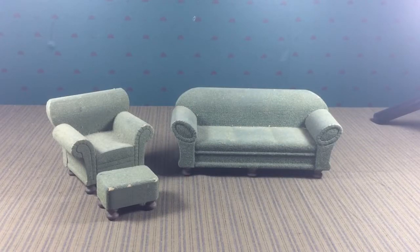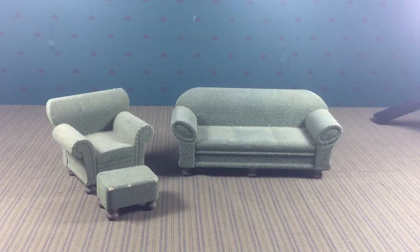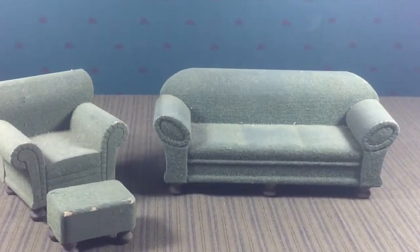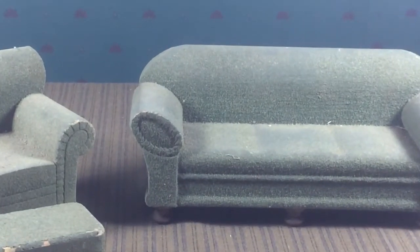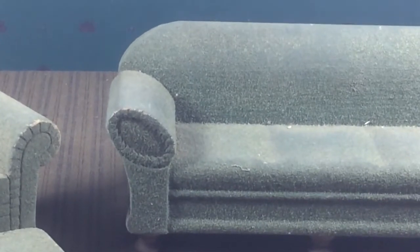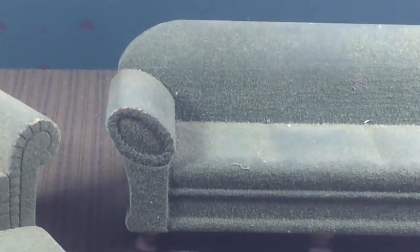These are solid wood but they're flocked to make it look like upholstery. The sofa, chair, and ottoman. The sofa and chair have a nice design on the front of the arms.